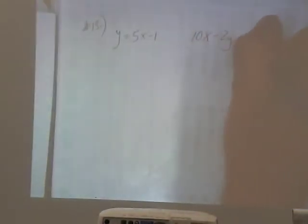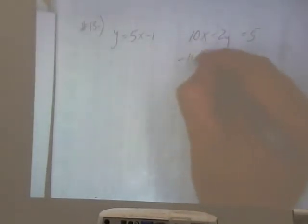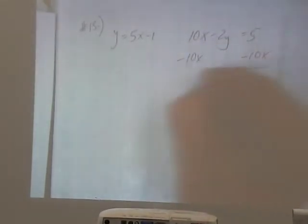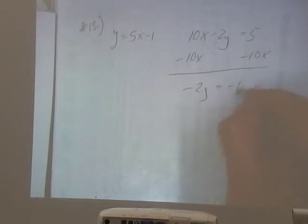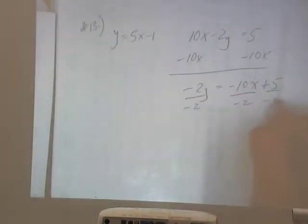And the second one is 10x minus 2y is equal to 5. I want to get this in slope-intercept form. So I'll minus the 10x over. So I get negative 2y is equal to negative 10x plus 5. And divide everything by negative 2. So y is equal to 5x plus 5x.